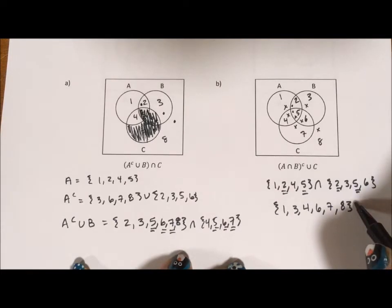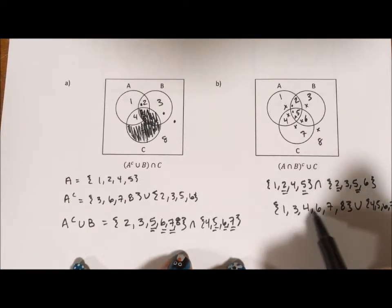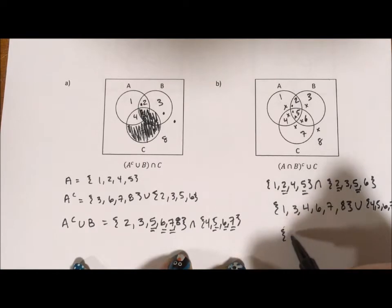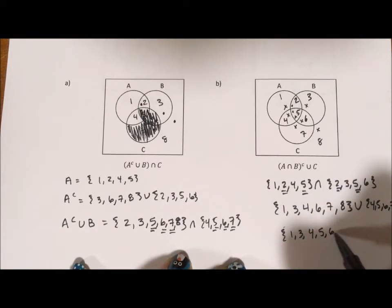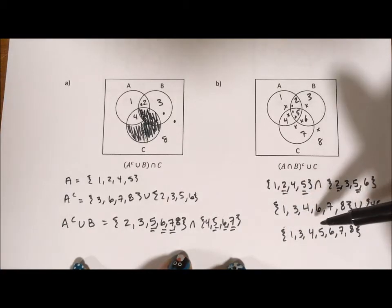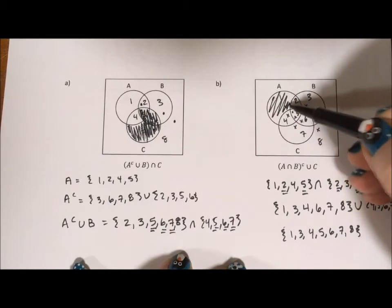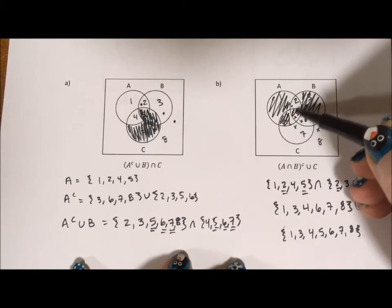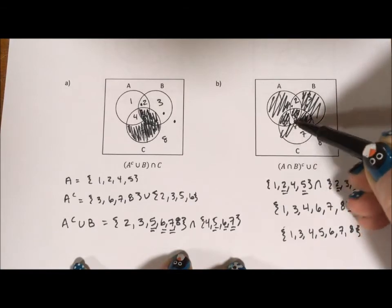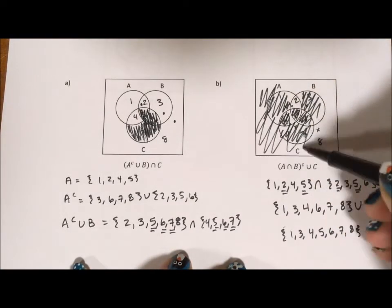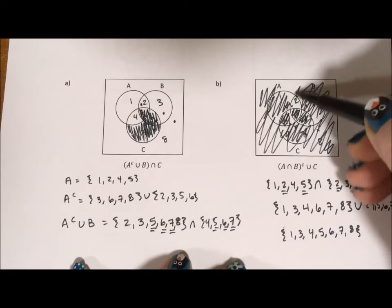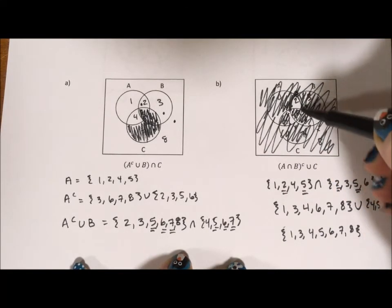And we want to do the union of that with C, which is 4, 5, 6, and 7, which means 4, 5, 6, and 7. It means we're going to do the exact one we had before with section 5 being included as well. So 1, 3, 4, 5, 6, and 7. Everything but 2. So 1, 3, 4, 5, 6, 7, and 8. And this little guy right here is not shaded.